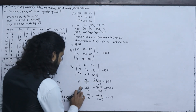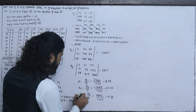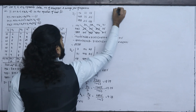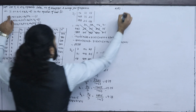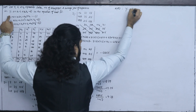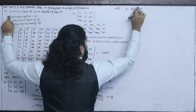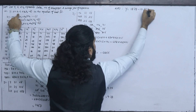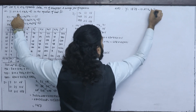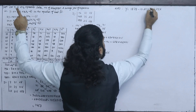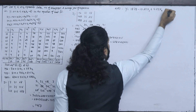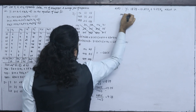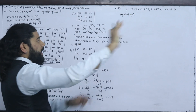A equals D1 divided by D, B1 equals D2 divided by D, B2 equals D3 divided by D. So D1 is 27381 divided by 1457, D2 is minus 17855 divided by 1457, and D3 is 6895 divided by 1457. This gives A equals 18.79, B1 equals minus 12.25, and B2 equals 4.73. The line of best fit equation is y equals 18.79 minus 12.25x1 plus 4.73x2, which is the required equation.